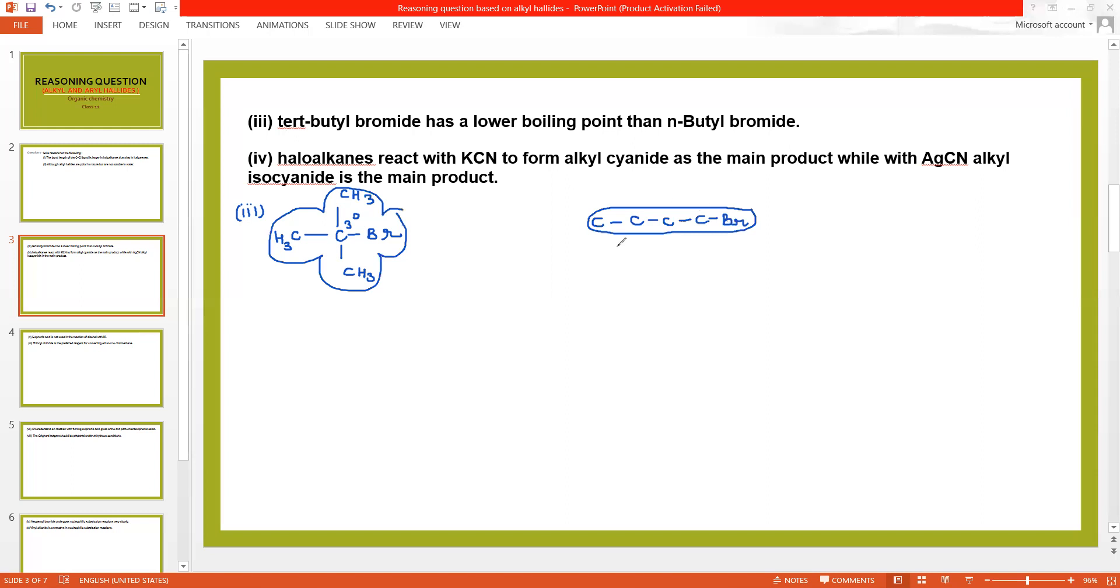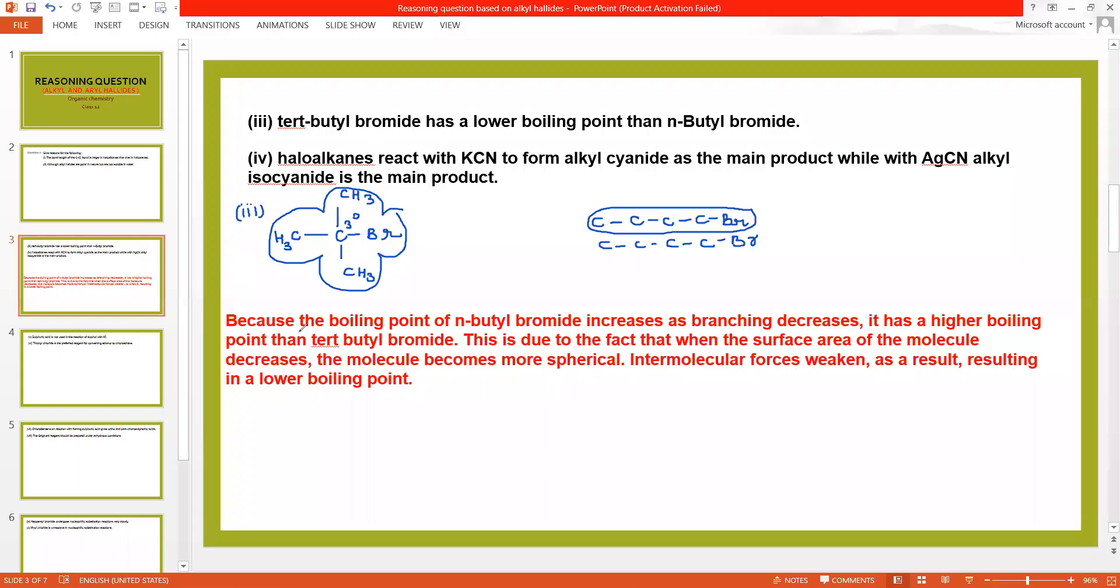So as branches increase the surface area is lesser than that of n-butyl bromide. And this is the reason that the molecules have more surface area, van der Waals force of attraction will be more. And if the surface area is less, then intermolecular force will weaken resulting in lowering of boiling point.